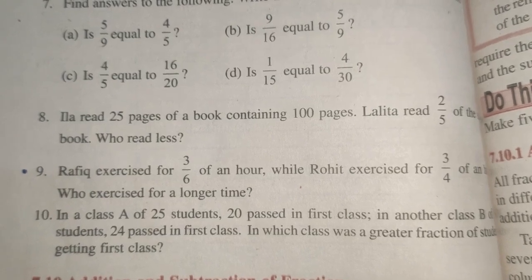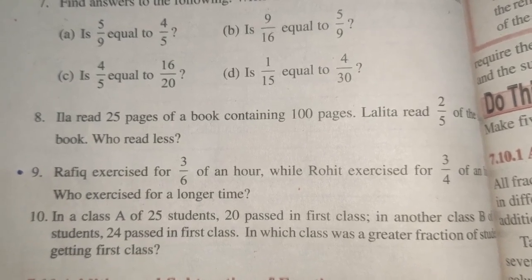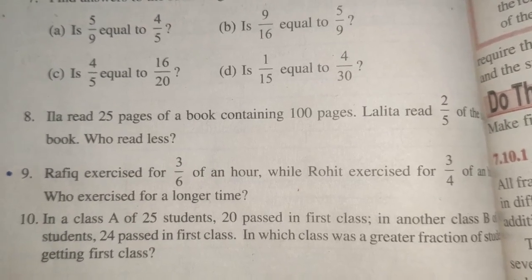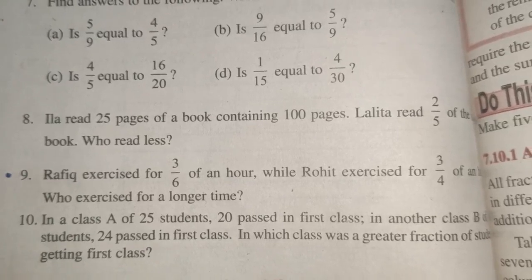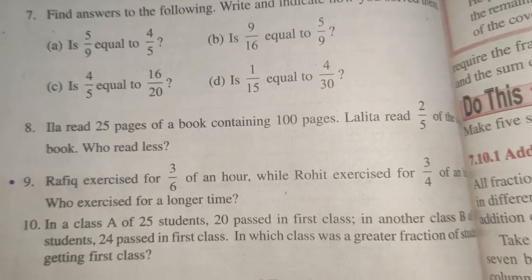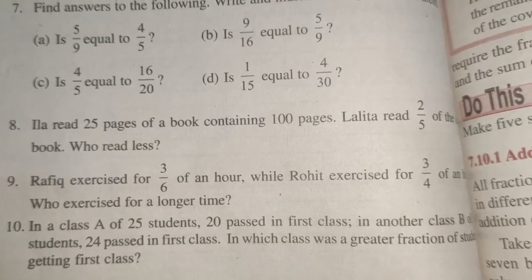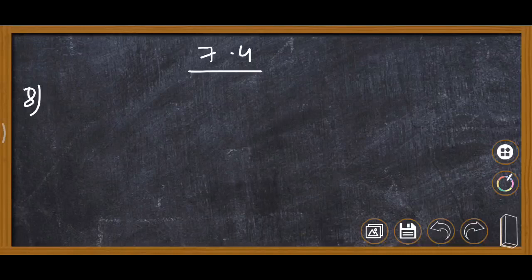Question Number 8: Illa reads 25 pages of a book containing 100 pages, and Lalitha reads 2 upon 5 of the same book. We have to compare and find out who read less — between Illa and Lalitha. First of all we will find the fraction of the book that Illa read.